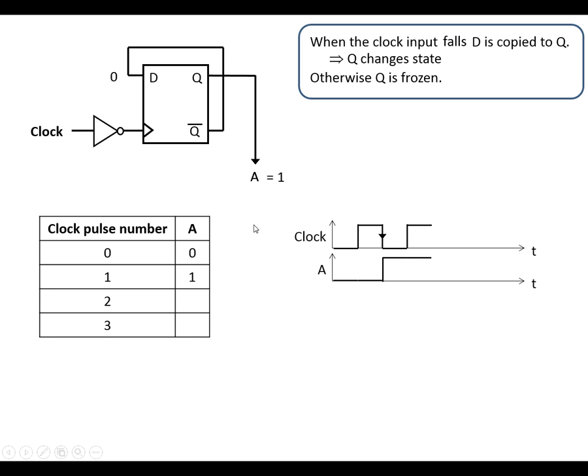Next clock pulse coming in, so the clock there rises and then it falls which means this rises. D gets copied to Q. So we've now got a zero at the output. And Q bar is the opposite. It becomes a 1. I'm going to put that in the table.